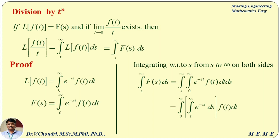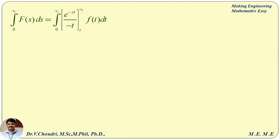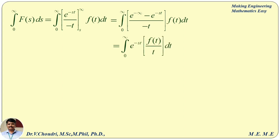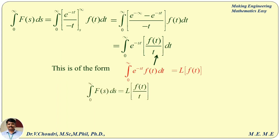Here e^(−st) is only a function of s, so integral from s to infinity of e^(−st) ds gives e^(−st) divided by −t, with limits s to infinity. Applying the limits: e^(−∞) minus e^(−st) divided by −t simplifies to e^(−st)/t. This gives integral from 0 to infinity of e^(−st) f(t)/t dt, which is of the standard form with f(t) replaced by f(t)/t. Therefore this integral equals L of f(t)/t.